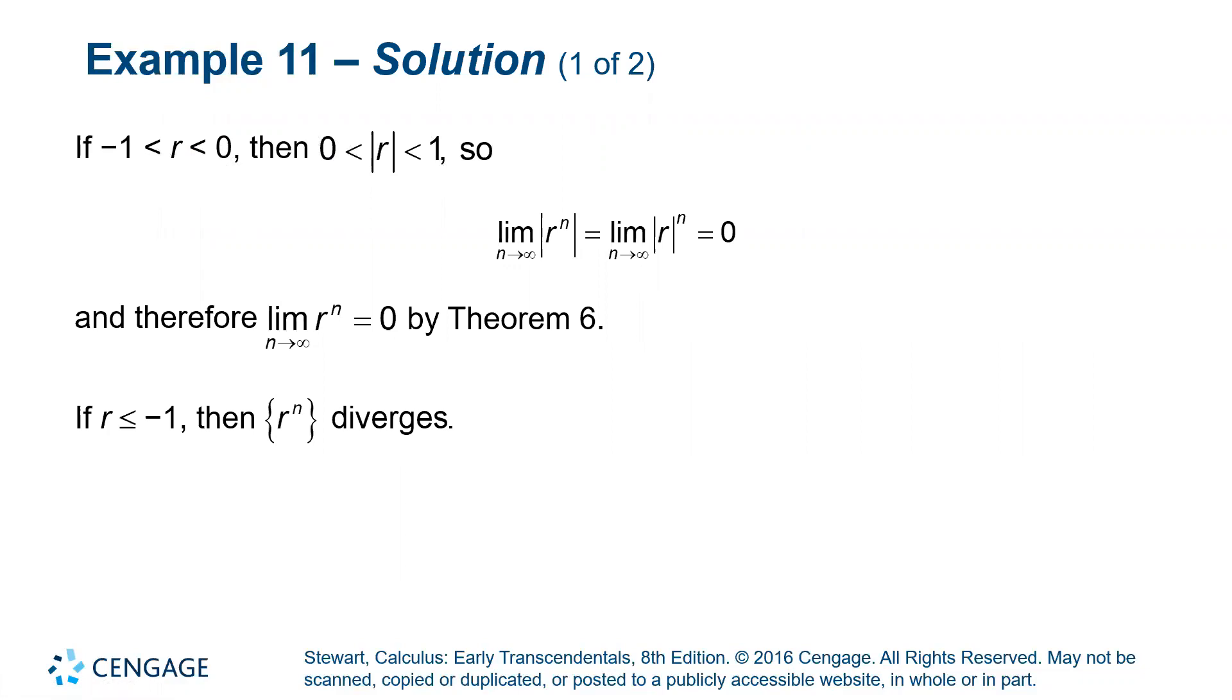So using that theorem from the last video where the limit of the absolute value is the same as without the absolute value, we would have those limits being the same. So the limit of R to the N is still zero when R is between negative one and zero, just like it is when R is between zero and one.